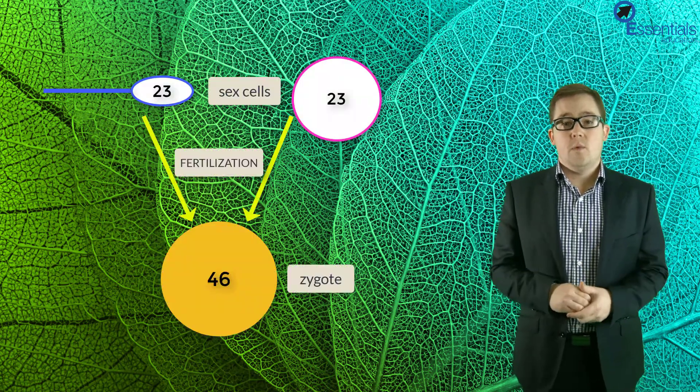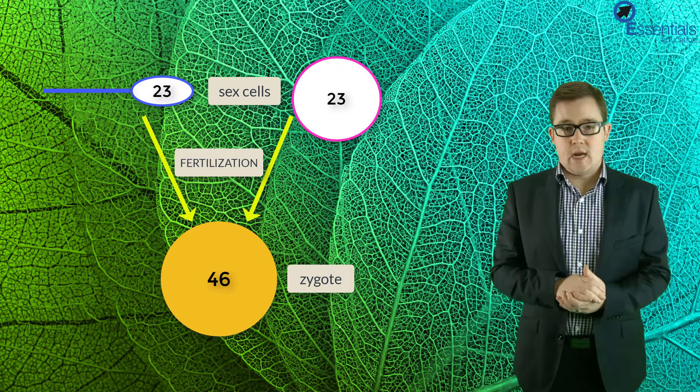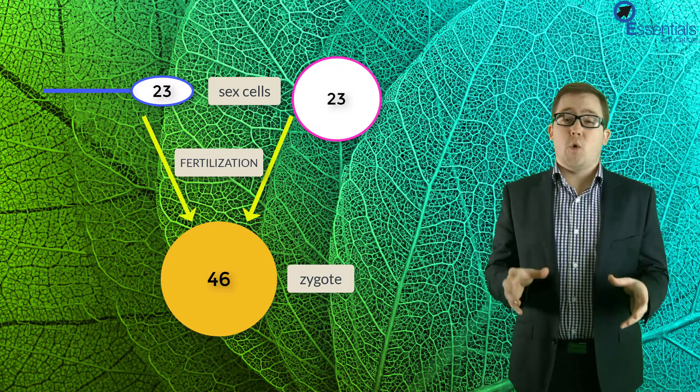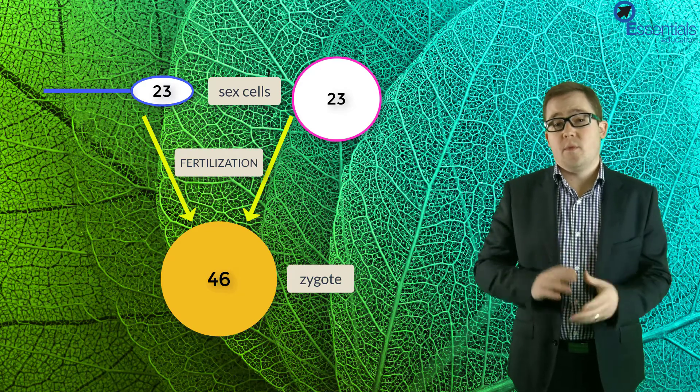It is also really important at this stage to recognize why we do this process. In essence, it allows for sexually reproducing organisms to exist. Now meiosis results in haploid sperm and egg, which contain half the original amount of DNA. This then allows for fertilization, which is the joining of sperm and egg to restore the diploid number.